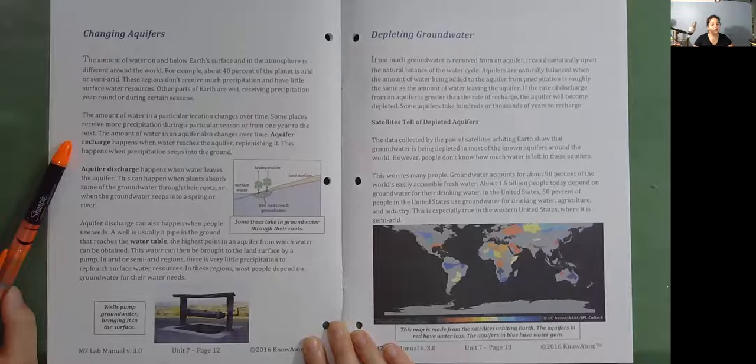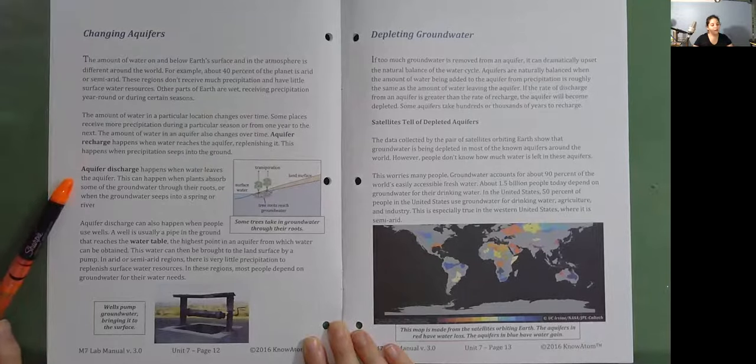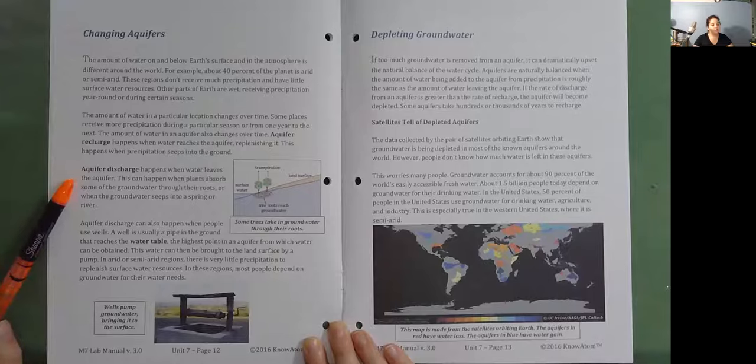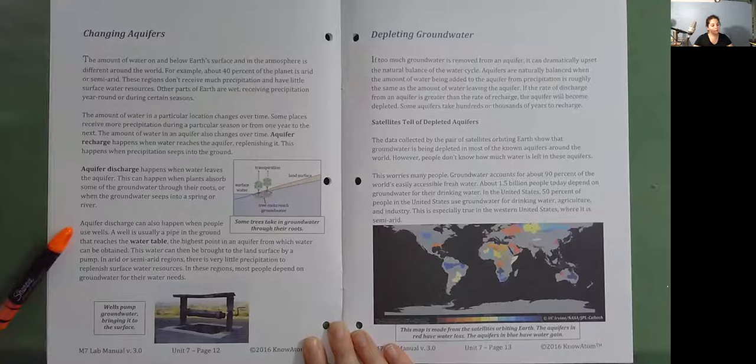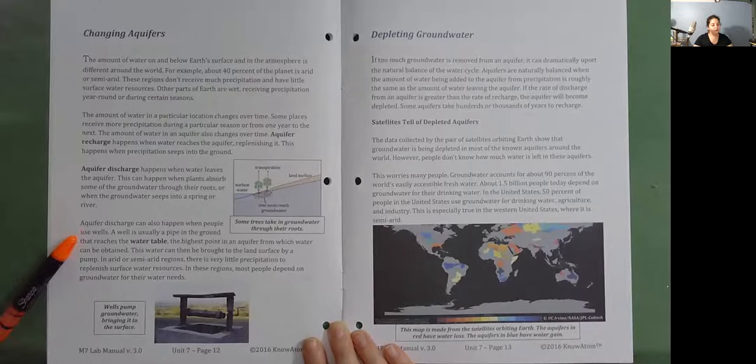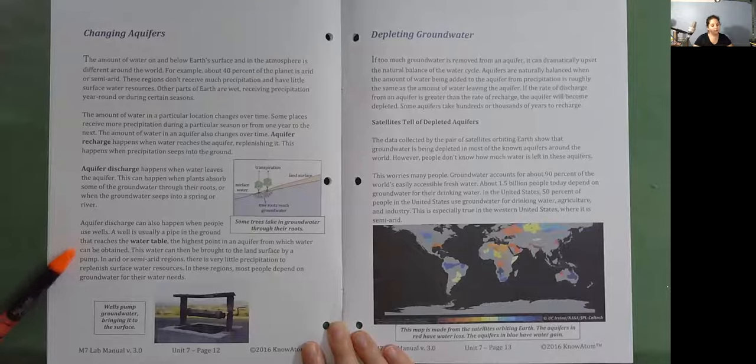The amount of water in an aquifer also changes over time. Aquifer recharge happens when water reaches the aquifer, replenishing it. This happens when precipitation seeps into the ground. Aquifer discharge happens when water leaves the aquifer. This can happen when plants absorb some of the groundwater through their roots, or when the groundwater seeps into a spring or river. Aquifer discharge can also happen when people use wells. A well is usually a pipe in the ground that reaches the water table, the highest point in an aquifer from which water can be obtained.